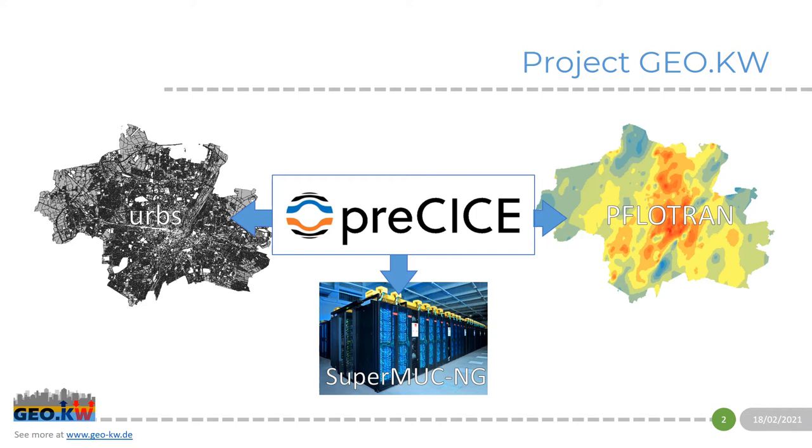For that we have on the left the energy system optimization framework URBS, which tries to optimize the energy system. On the right the groundwater flow simulation of PFLOTRAN, where we will analyze the groundwater flow and groundwater temperature. These both are coupled with PreCICE. As the problem is quite big, we have to use the SuperMUC to solve it for the whole city of Munich.